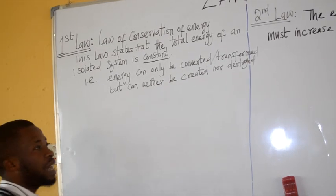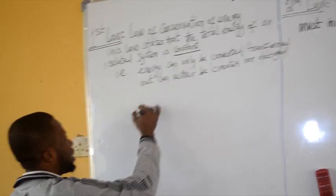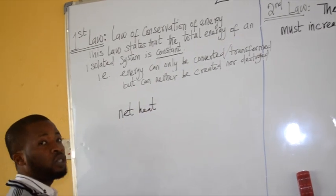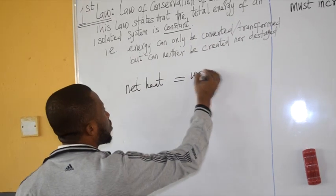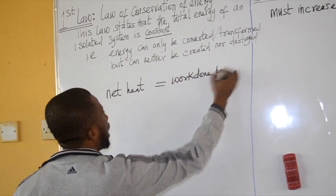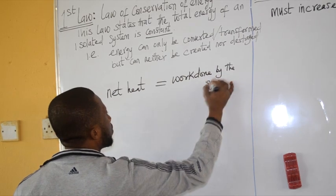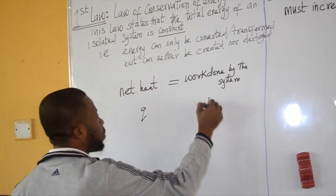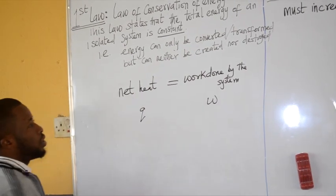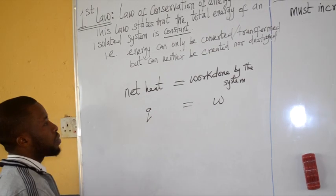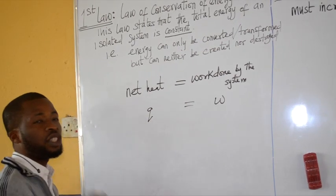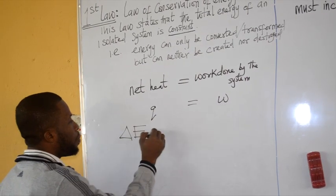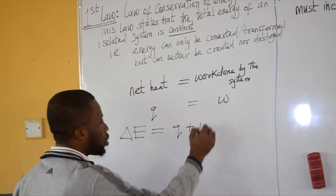Mathematically, it simply means that the net heat that is passed into a system must be equal to the work done by the system. So heat is symbolized Q and work is symbolized W. So Q must equal W, which consequently affects the internal energy of the system, meaning that the change in internal energy of that system must be equal to Q plus W.